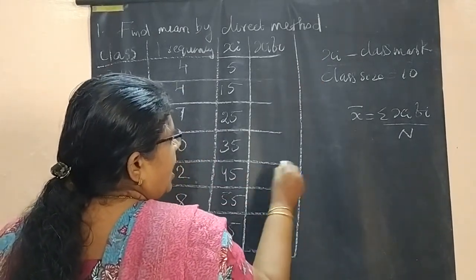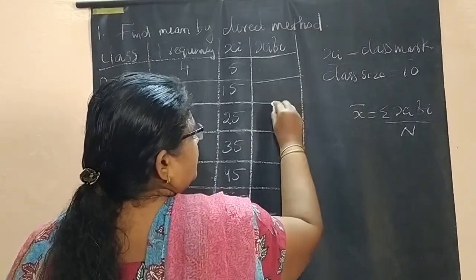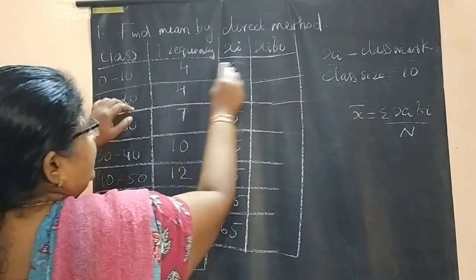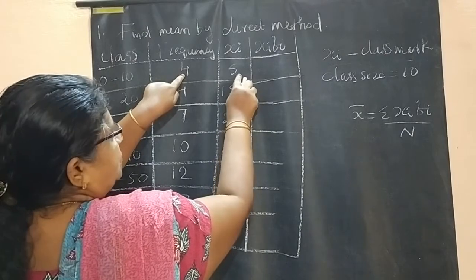Then you have to add that. While adding, you will get the sum. Multiply xi and fi. This is our xi column, this is our fi column.